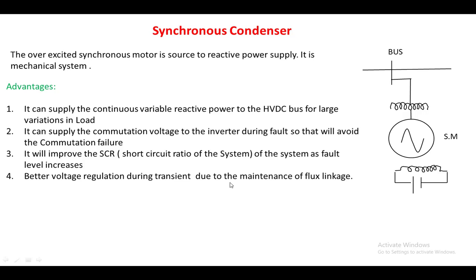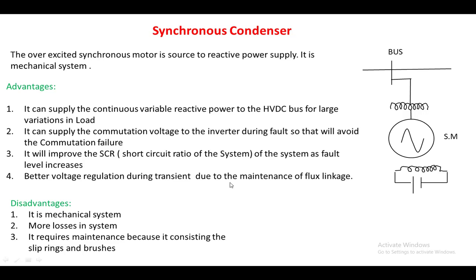The synchronous condenser gives better voltage regulation during transients due to the magnetic flux linkages existing in the synchronous motor. The disadvantages are that it is a mechanical system with higher losses, lower efficiency, and it requires maintenance because it consists of slip rings and brushes.